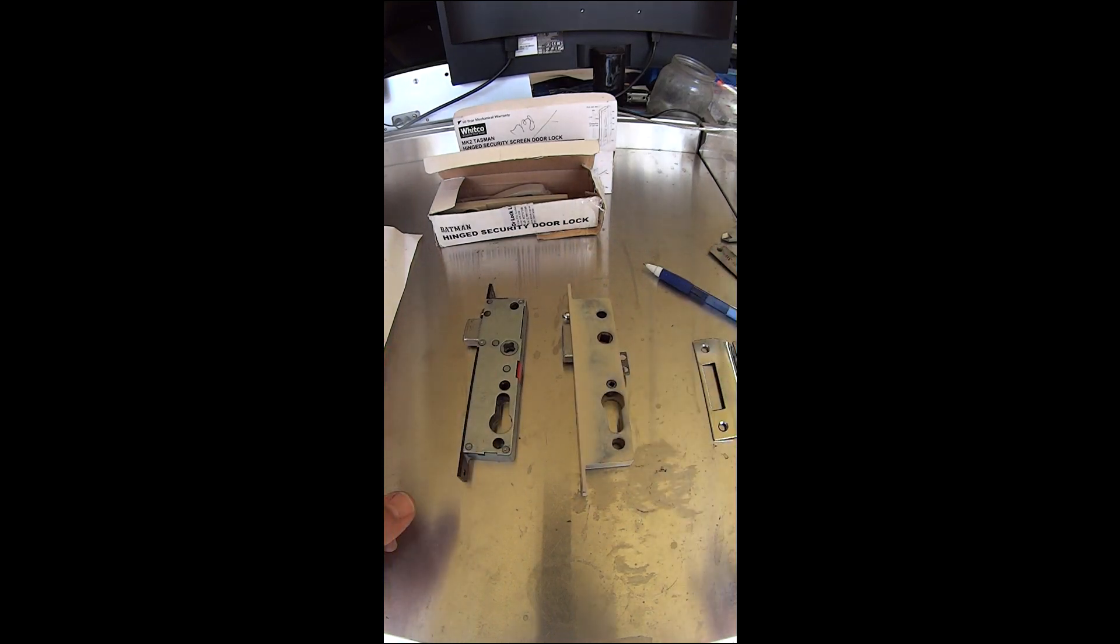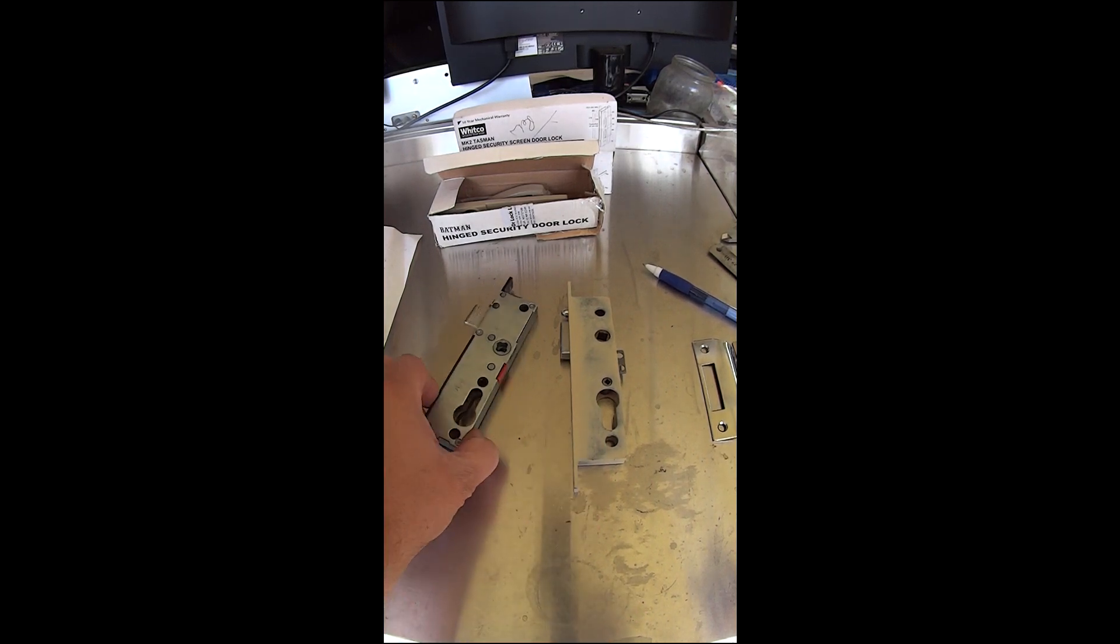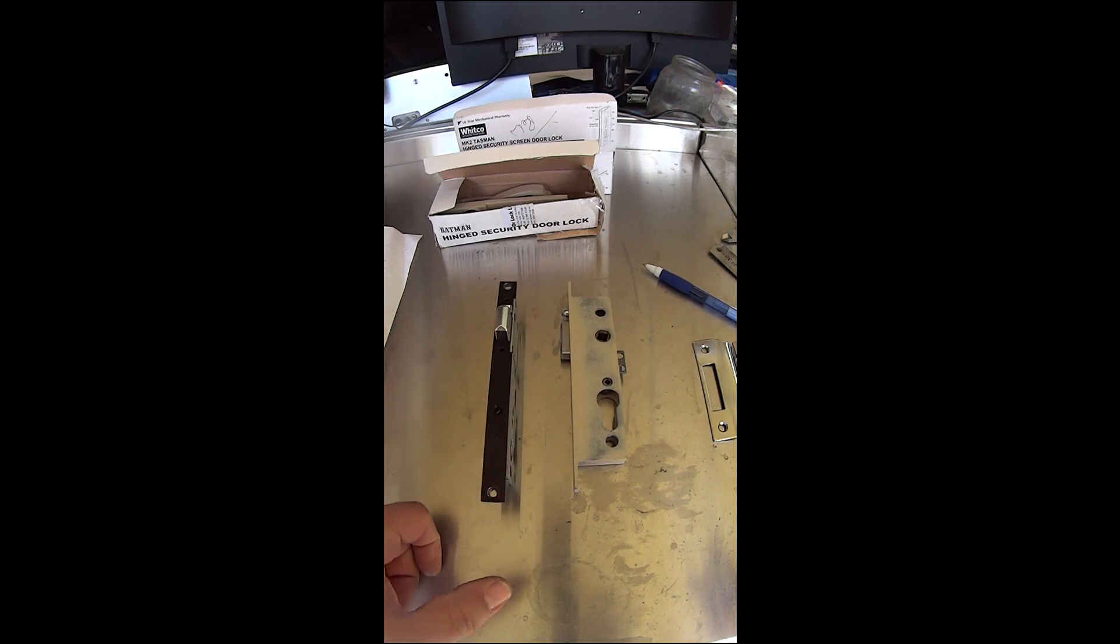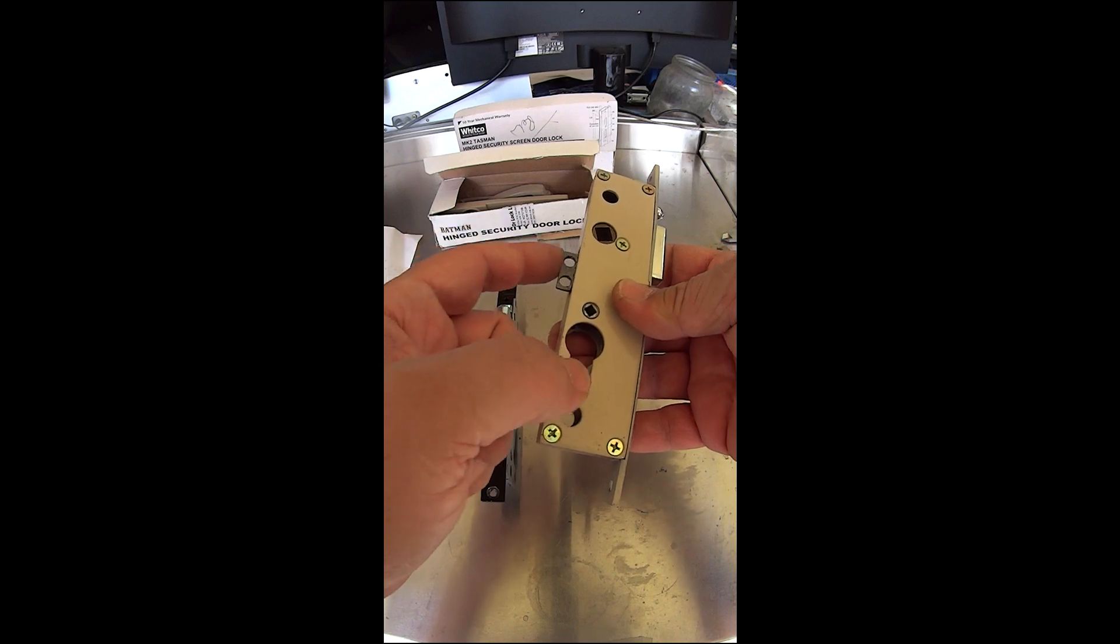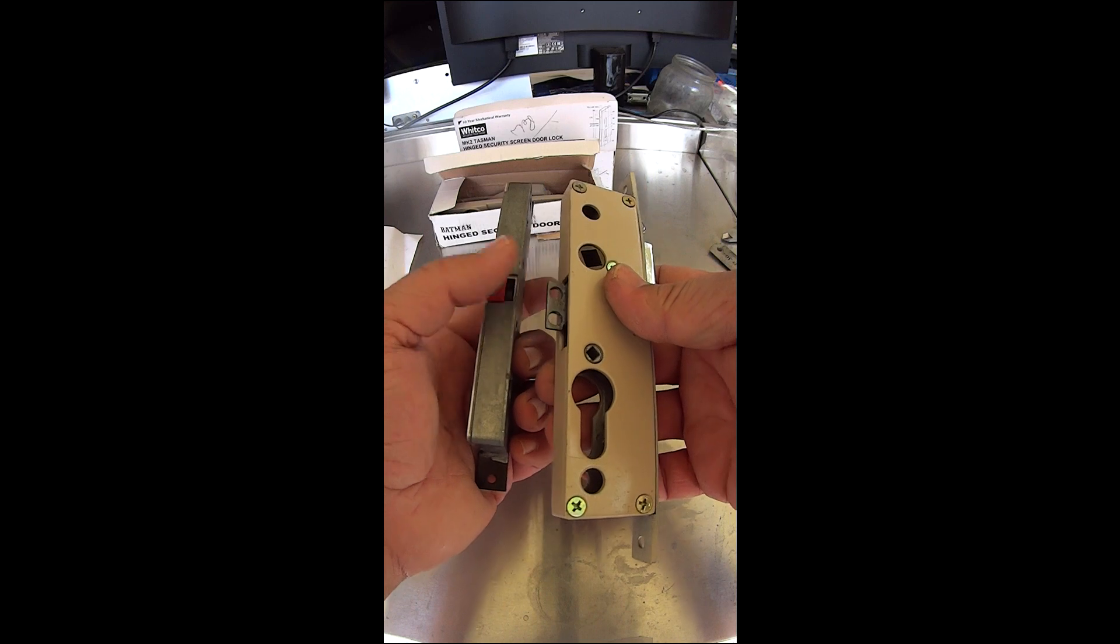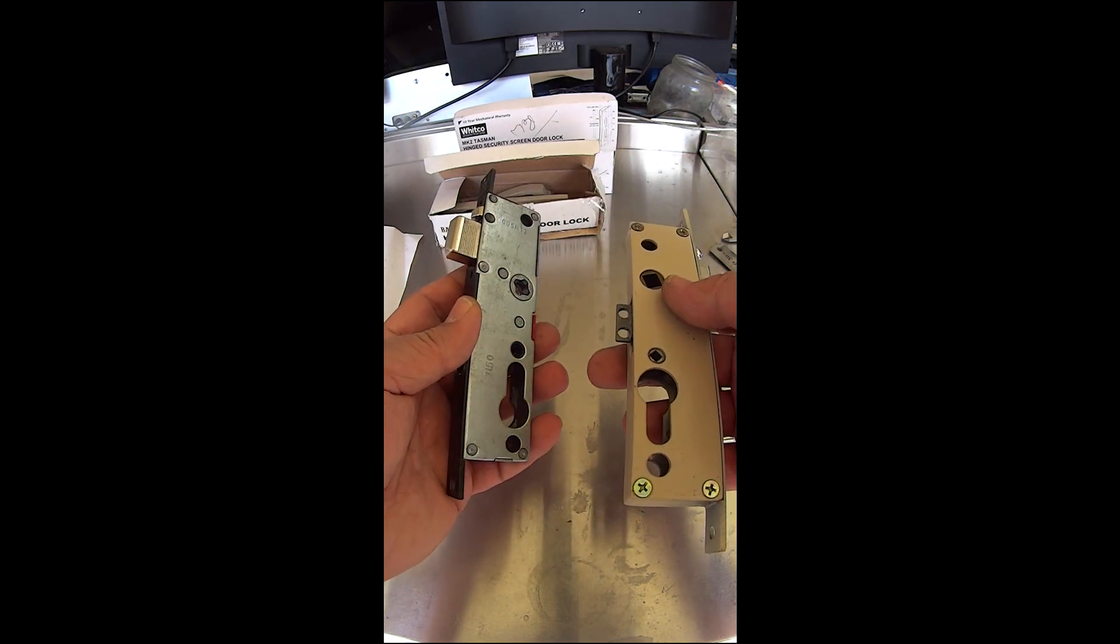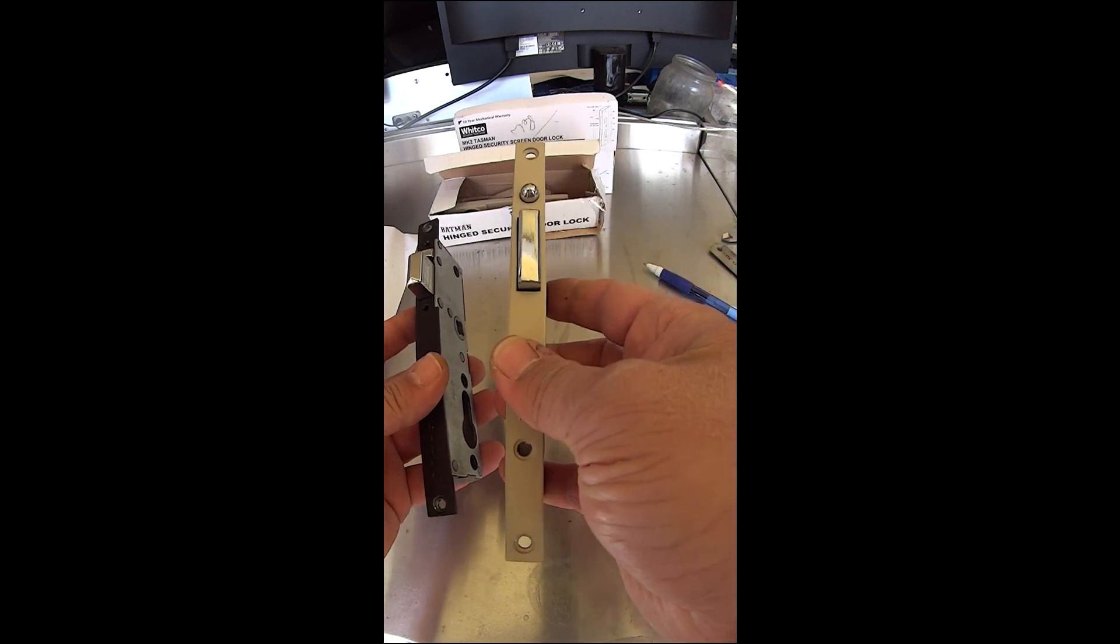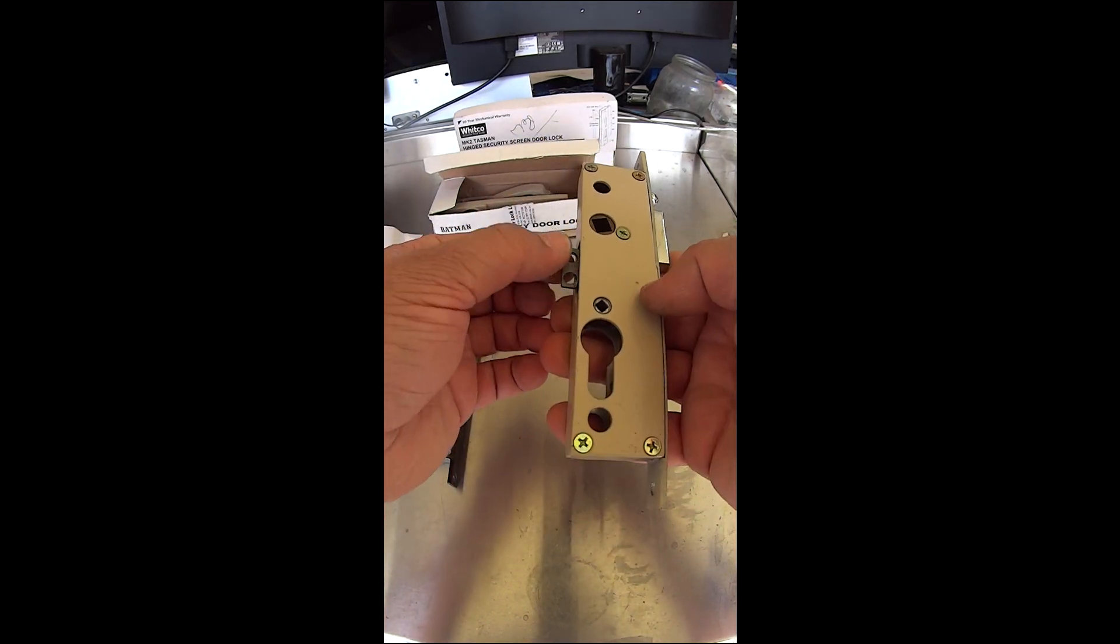It's a good lock, the Witko Tasman Mark 2 and Mark 3, stronger than the Batman in my opinion. The Witko Tasman Mark 2 or 3 can replace the Batman but it can't if you've got the three-point locking. The three-point locking is not included on the Witko Tasman, so if you've got three-point locking you're going to need a whole new lock and three-point locking kit to replace this Batman.